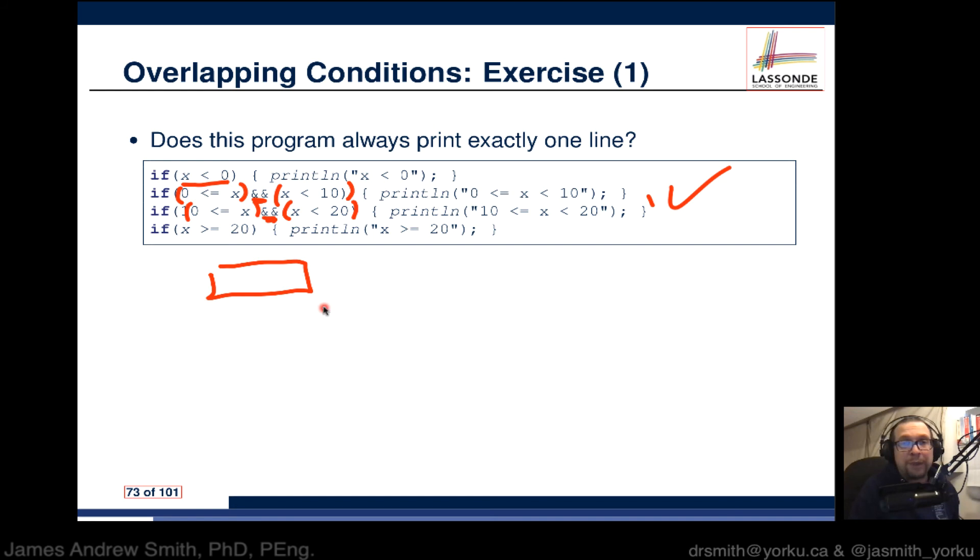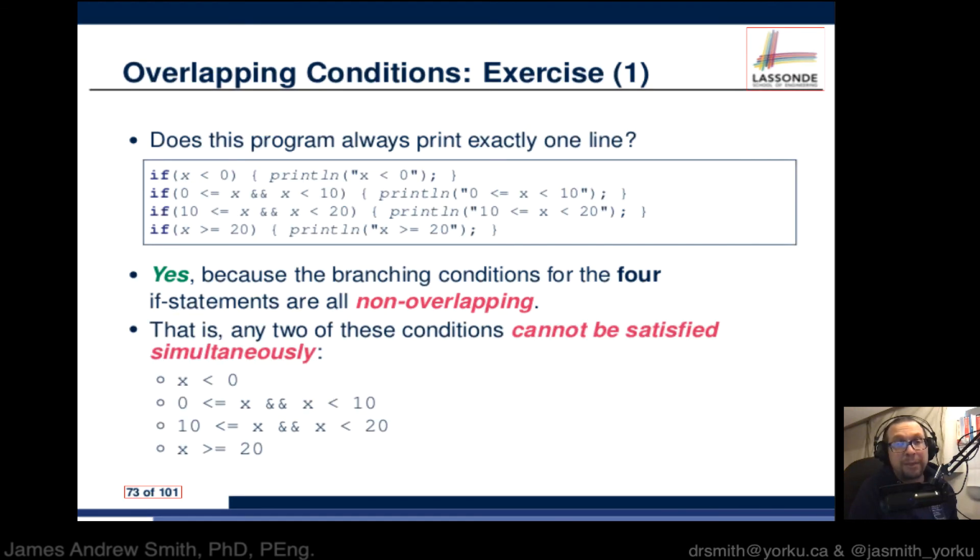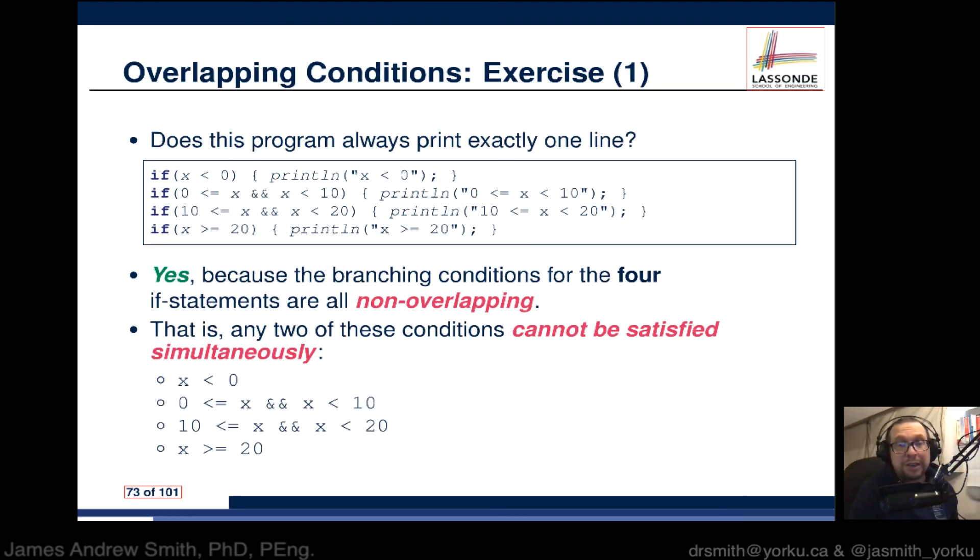Basically, you've got a zone of, over here, x is sort of less than zero. Then you've got it for between zero and 10. And then you've got it between 10 and 20. And then you've got everything from there. Actually, from there as well. Negative here. Everything above 20 as well. So it really is designed to be independent. So that's a good thing. So yes, because the branching conditions for all four if statements are all non-overlapping. That is, any two of the conditions cannot be satisfied simultaneously. And there are different ways of setting up your if else or your if statements to do that. It's important that, regardless of how you go about doing it, that you keep that, you do it intentionally.